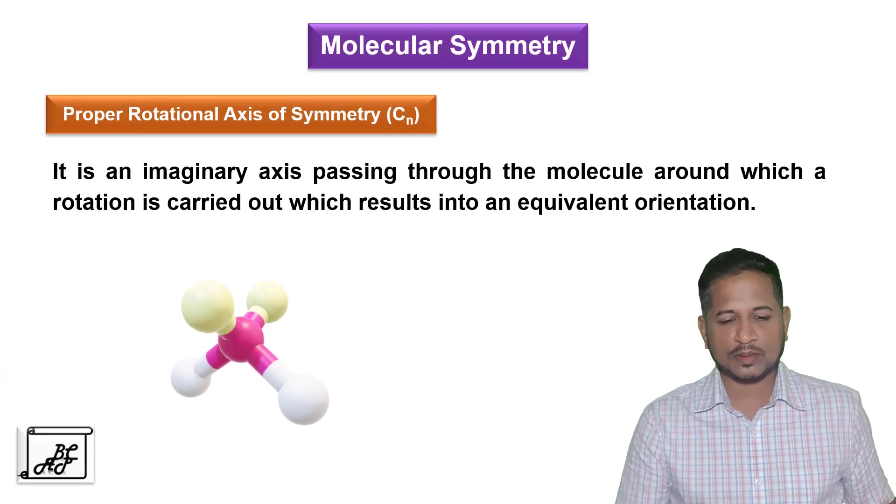This is the molecule of dichloromethane. These are the two chlorine atoms, these are the two hydrogen atoms, and at the center there is a carbon. If I rotate this molecule around this axis through 180 degrees, I will get an equivalent image. If I rotate the molecule again by 180 degrees, I will get an identical image. In the last video we saw the difference between equivalent image and identical image — so first we get the equivalent image and then we get the identical image. That is, after two 180-degree rotations, we are getting the identical image.